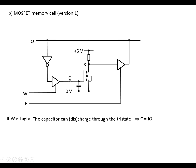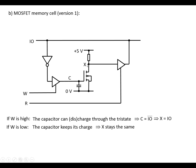Which means that the voltage at C is going to be opposite to what's on the data line. So if we've got a 0 here, it's going to be a 1; if we've got a 1 here, it's going to be 0. And the voltage at X — if this is high, this is going to be low. So if we've got a high on the data line, C is going to be low, which means X is going to be high, and vice versa. So X is going to store exactly the same data as we've got on the data line. If W is low, the capacitor is going to keep its charge because it's disconnected, so X is going to stay the same. So that data is now stored.